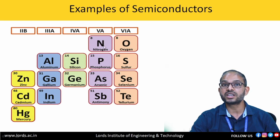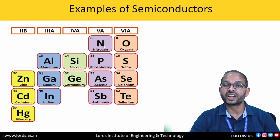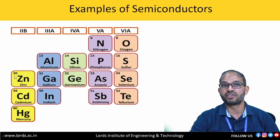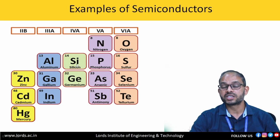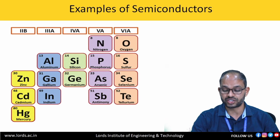By adding third and fifth group elements, we get compound semiconductors like aluminum nitride and gallium phosphide — these all form a direct bandgap structure, so they are examples of direct bandgap semiconductors. By adding second and sixth group elements like zinc oxide and cadmium sulfide, we get compound semiconductors, and they come under examples of indirect bandgap semiconductors based on band structure.